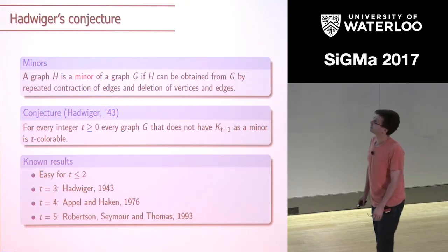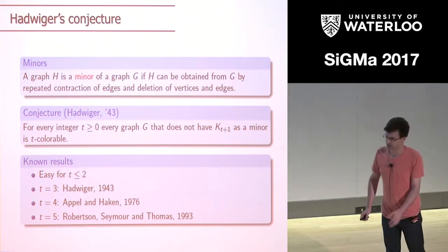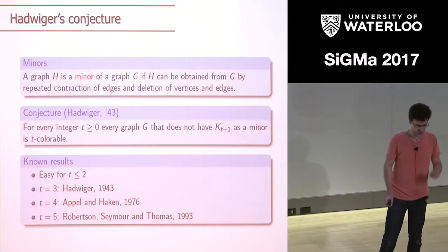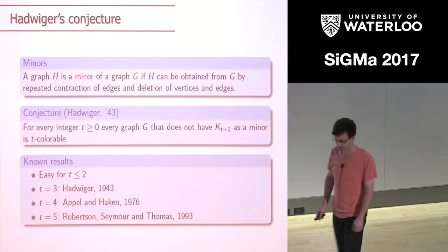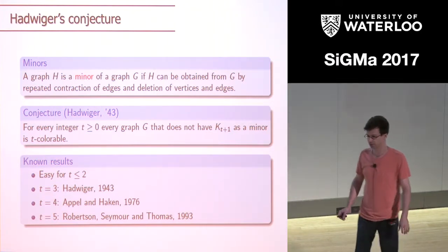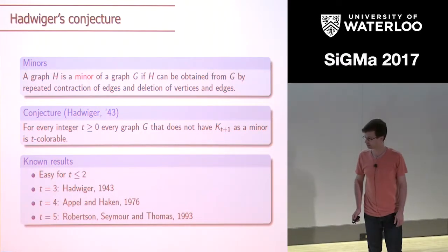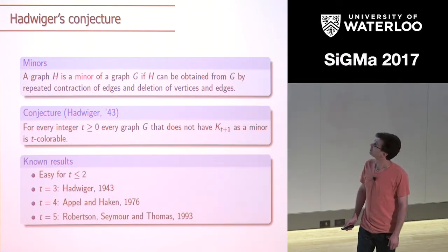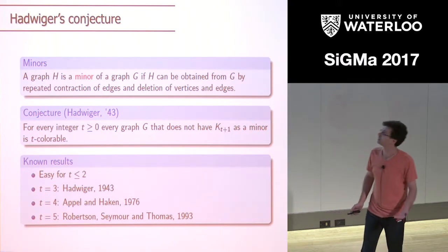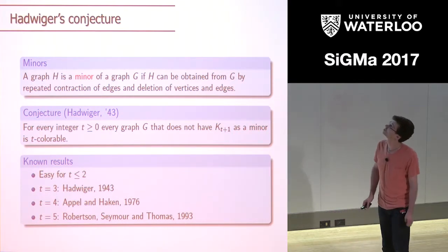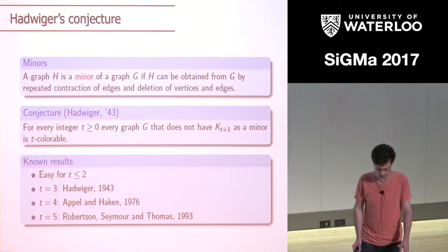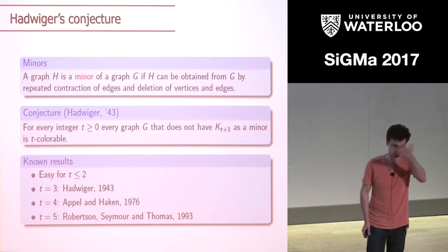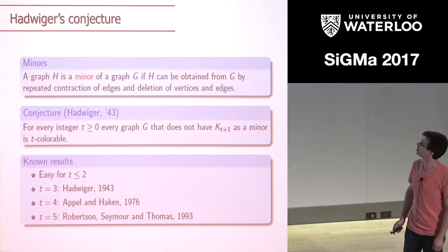The motivating conjecture by Hadwiger says that if a graph — and all the graphs we consider are simple, without loops or parallel edges — doesn't contain a complete graph on t+1 vertices as a minor, then it should be properly colorable in t colors.